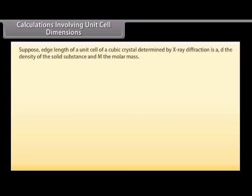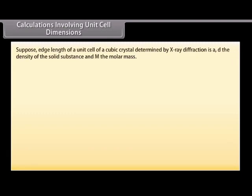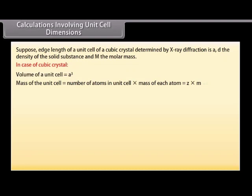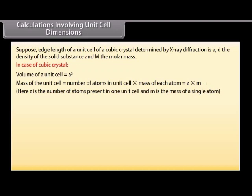Calculations involving unit cell dimensions. Suppose the edge length of a unit cell of a cubic crystal determined by X-ray diffraction is A, D is the density of the solid substance, and M is the molar mass. In the case of a cubic crystal, the volume of a unit cell is equal to A cubed. The mass of the unit cell is equal to the number of atoms in the unit cell multiplied by the mass of each atom, which is equal to Z times M. Here Z is the number of atoms present in one unit cell and M is the mass of a single atom.